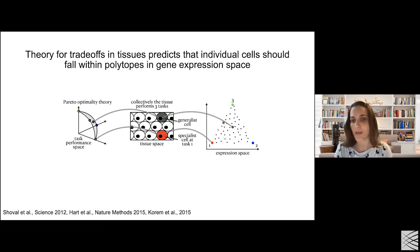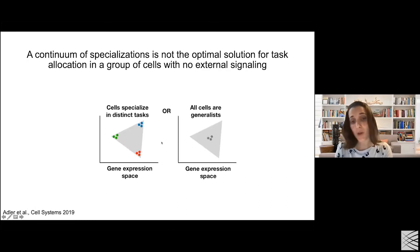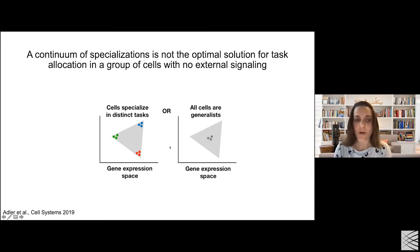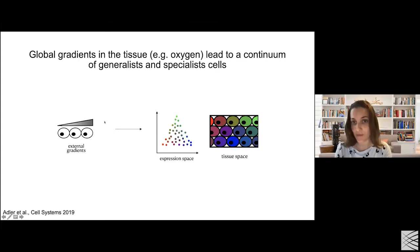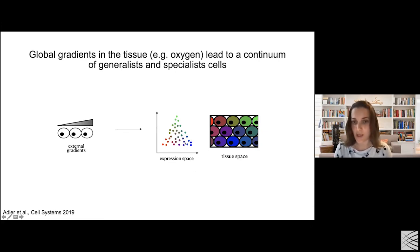The theory predicts that the optimal trade-off is accomplished when cells lie in low-dimensional polytopes in gene expression space, where the number of vertices corresponds to the number of tasks they trade off. For three tasks it would be a triangle, four tasks a tetrahedron, and so on. Cells near the vertices are specializing at each task, while cells in the middle are generally performing all tasks. If there is no external signal in the tissue, the optimal solution is for cells to either cluster into distinct groups of specialty cells or for all cells to be generalists. Where does the continuum of expression we often see in real data come from? One possible explanation is a global gradient like oxygen that affects performance in different functions. In the presence of such a gradient, the theory predicts a continuum of specialization.